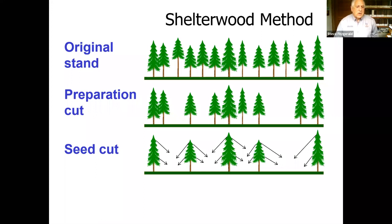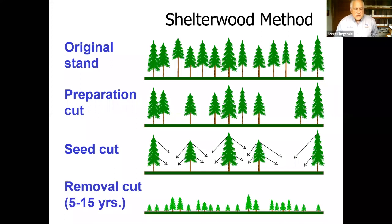The shelterwood seed cut leaves anywhere from eight to maybe 20 large trees per acre to produce seed and provide shelter — particularly on harsh south slopes or in frosty areas. In central Oregon around Sunriver, where you have a lot of lodgepole, maintaining a little overstory can actually protect seedlings from frost by preventing the re-radiation of heat into the atmosphere. Then in a removal cut, the overstory trees are removed and the understory is released, essentially taking on the look of a clear cut.